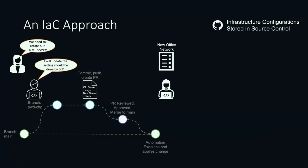Jane, two days later, is working on her switch process. She does the same steps — she's going to branch from the main into a new site branch. She'll make her changes, so in this scenario she's probably going to upload the details about this infrastructure: site names, hostnames, what the subnets are going to be out there. She's going to define the infrastructure by filling out this template for the most part.